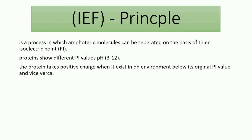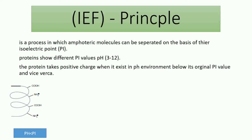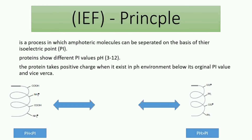Isoelectric focusing is a technique to separate proteins or any other amphoteric molecules based on their isoelectric points. The isoelectric point of proteins varies from 3 to 12. When proteins exist in acidic conditions — when their surrounding pH is much lower than their isoelectric point — the amino group takes protons from the surrounding environment and the protein will be positively charged. Conversely, when the surrounding pH is much higher than their isoelectric point, the carboxylic group donates protons and the protein becomes negatively charged. When the pH equals their isoelectric point, both groups are charged and the protein as a whole is neutral, with a net charge equal to zero.